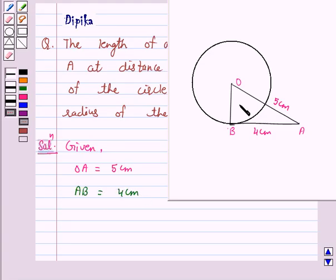We want to find OB. The tangent at any point of a circle is perpendicular to the radius through the point of contact.